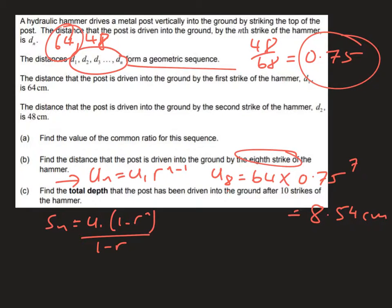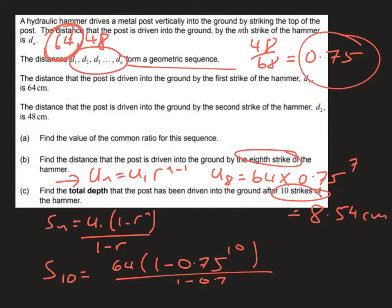In part C we're asked to find the total depth, and again here you're just going to use the formula from the form booklet. The sum SN is equal to U1 multiplied by 1 minus R to the power N, all over 1 minus R. So if we want to find S of 10 strikes, S10 is going to be U1, which from up here we know is 64, multiplied by 1 minus R to the power N, which here is 10, all over 1 minus 0.75.